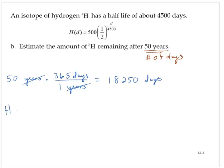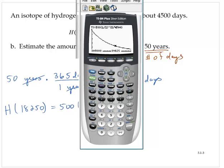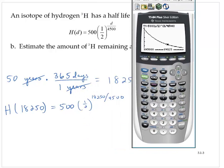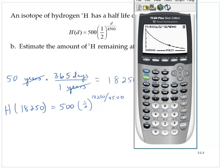So now we can find H of 18,250, which would be 500 times one-half raised to the quantity 18,250 over 4,500. Using the calculator on the home screen, 500 times one-half raised to the quantity 18,250 divided by 4,500, we find that that's approximately 30.1.